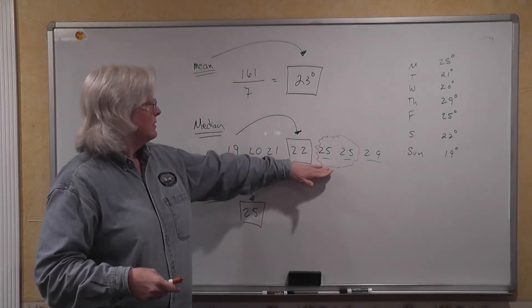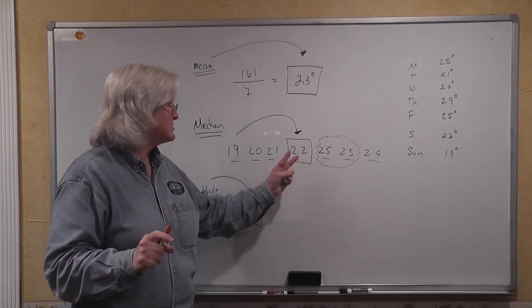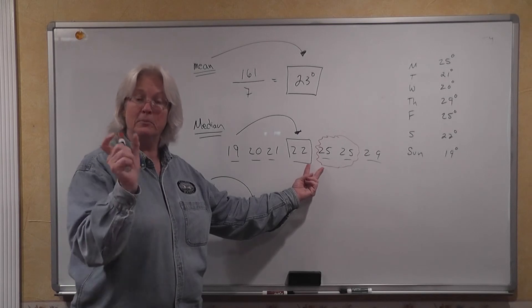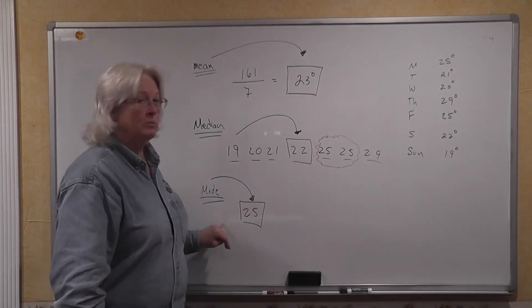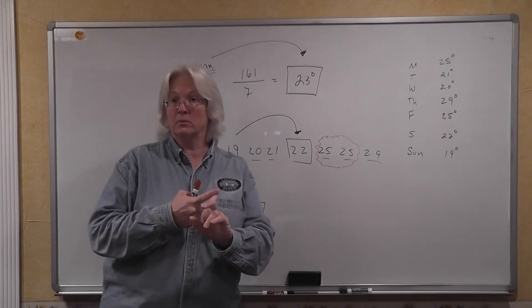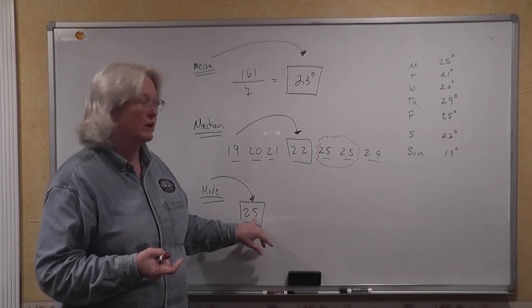with the median, if you have an even number of items, you don't have to take the average of the middle two numbers to come up with your median. And with your mode, sometimes there's not a mode. There can be no mode. There can be one mode, like we had here, 25.